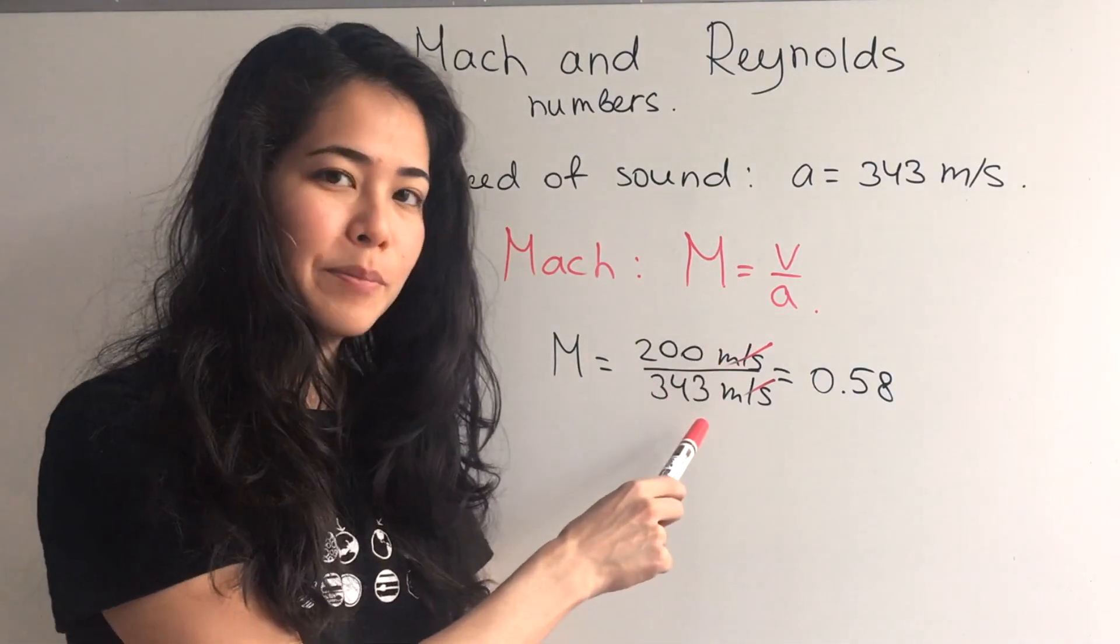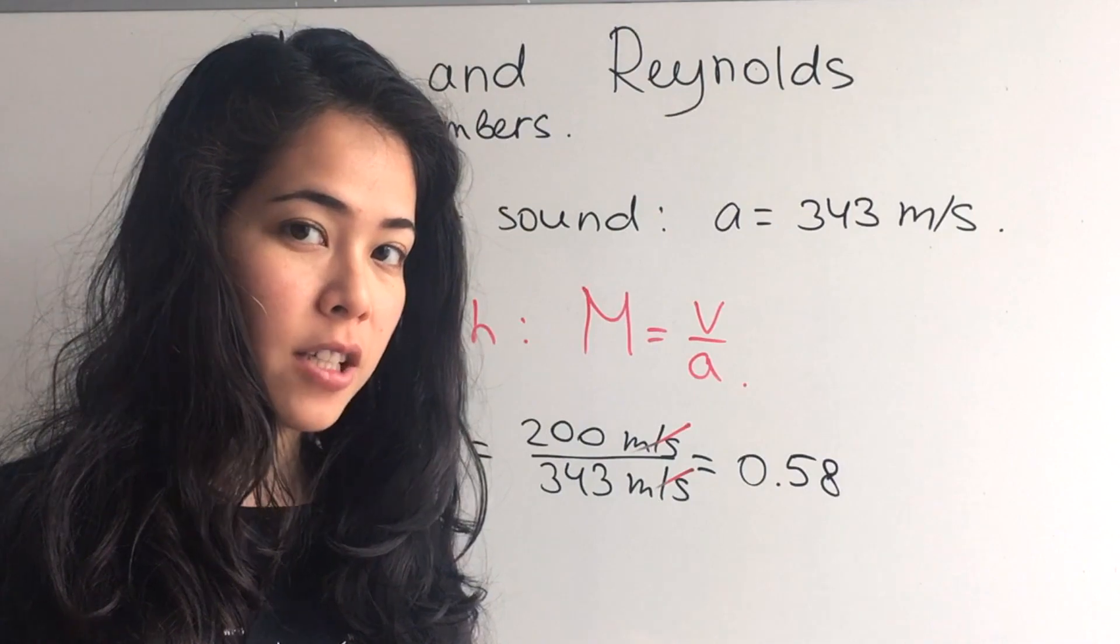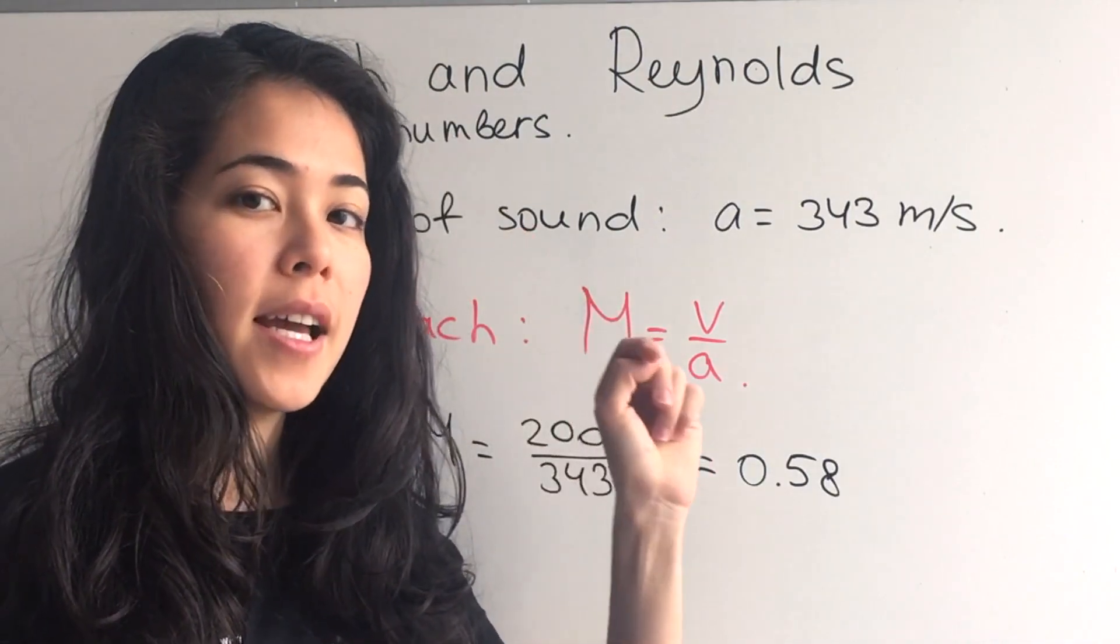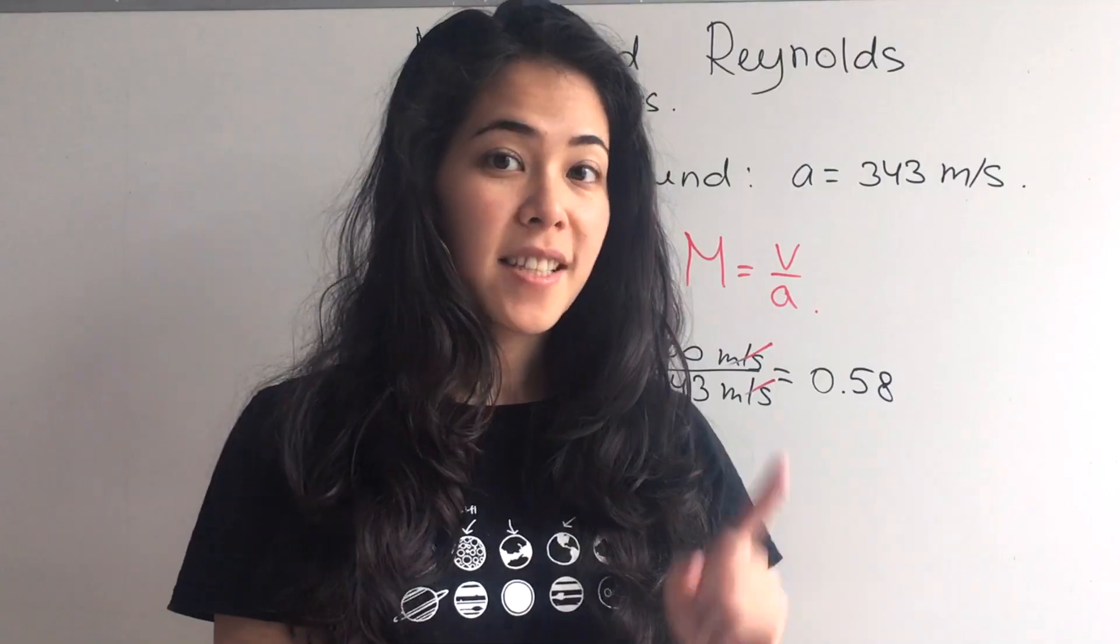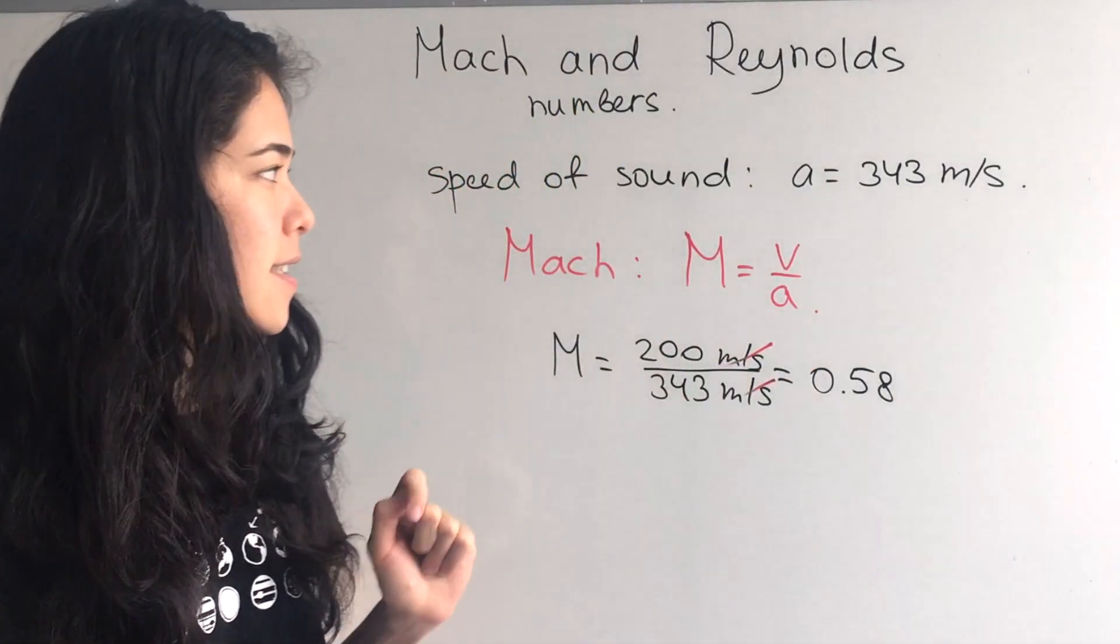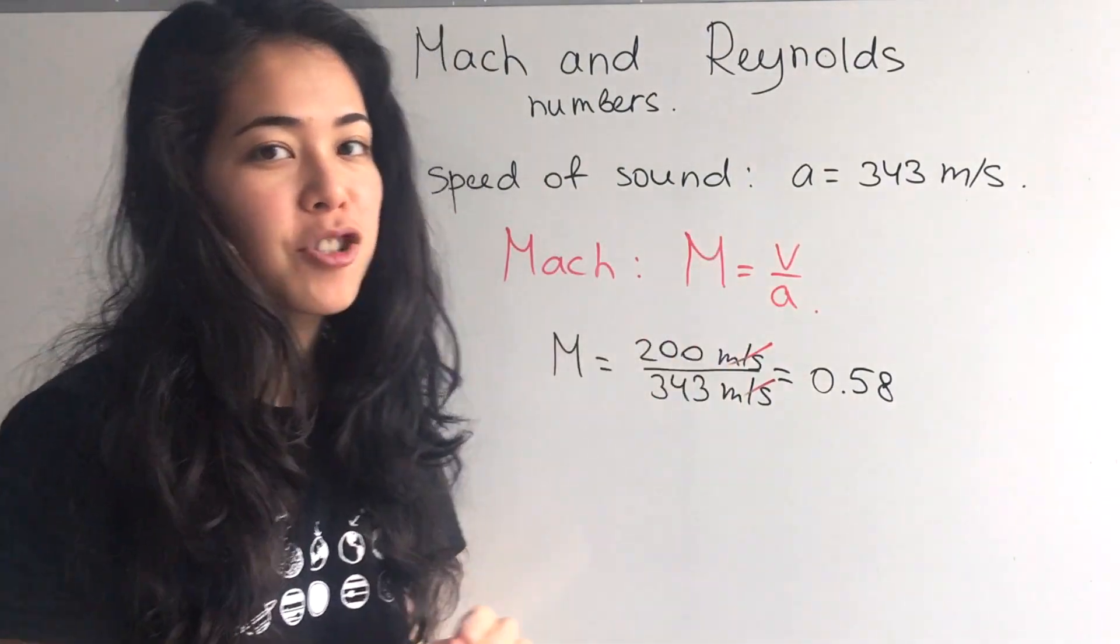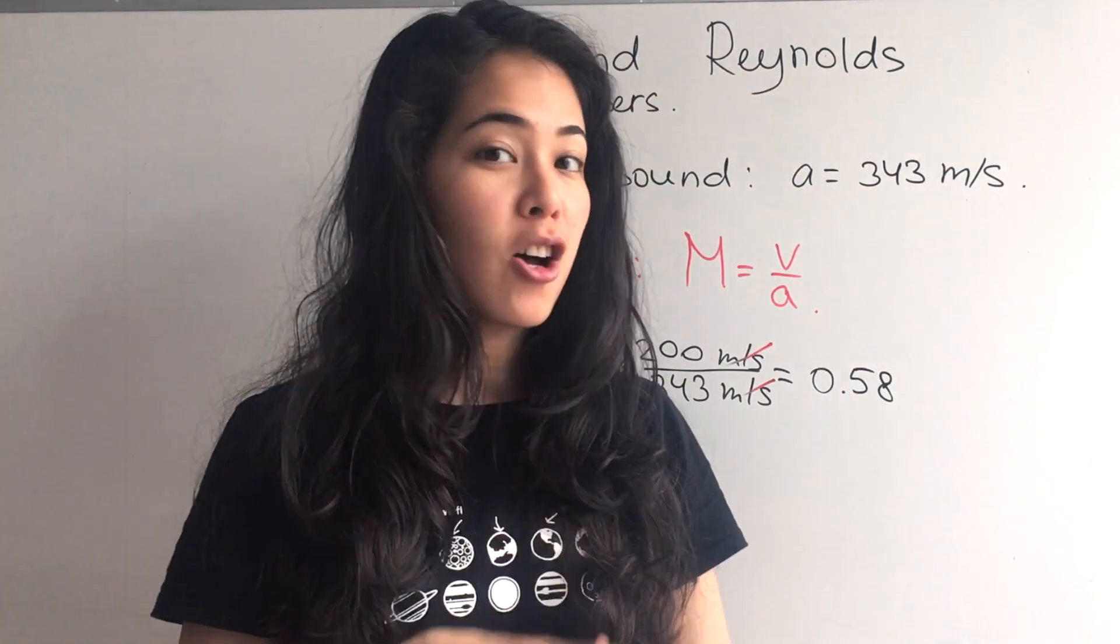Mach number is a dimensionless number because it's a ratio of two speeds or velocities. I will explain at the end of this video why Mach number and Reynolds number are so important in aerodynamics. But there's something we need to note in this equation - the speed of sound can change with temperature, so the speed of sound is not always the same.